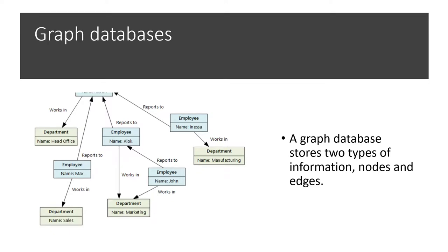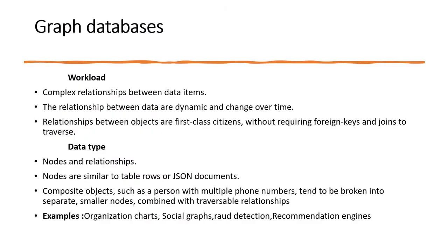Graph databases consist of two things: nodes and edges. Looking at an example, you can see the kind of relationships — one entity connects to another to fetch information. Doing this in a normal RDBMS database is very difficult and leads to query performance degradation. Graph databases support this kind of operation natively. They have nodes and edges and are mainly good when you have complex relationships between data items that are very dynamic in nature and change over time.